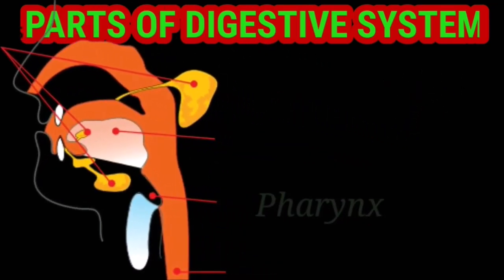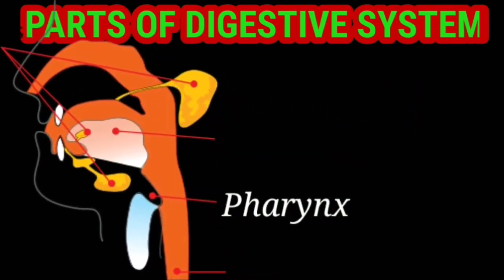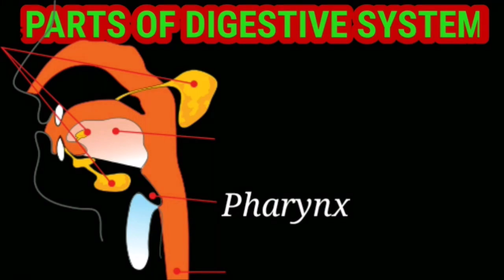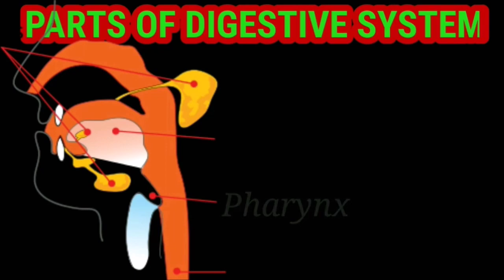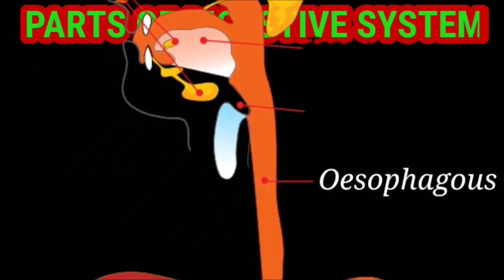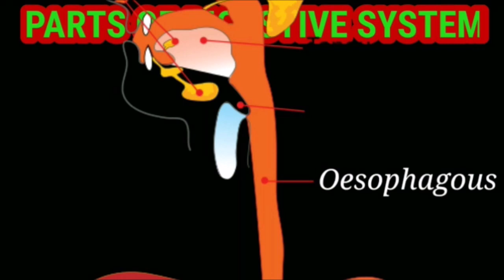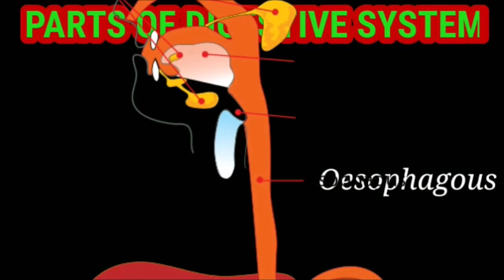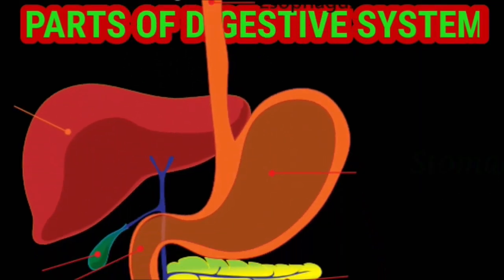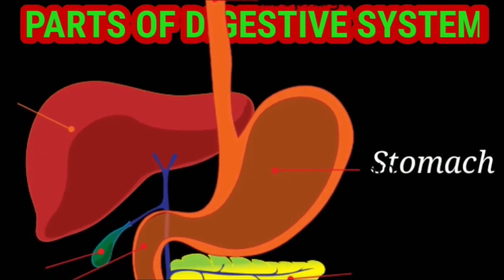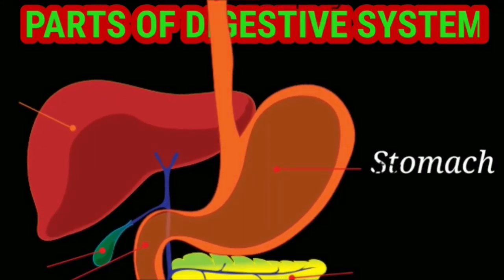The buccal cavity further leads to the pharynx, which is a junction of the digestive tract and respiratory tract. The digestive tract is followed by the esophagus, a long tubular structure. It leads into a big sack-like structure known as the stomach. The walls of the stomach contain digestive glands known as gastric glands, which secrete gastric juices.